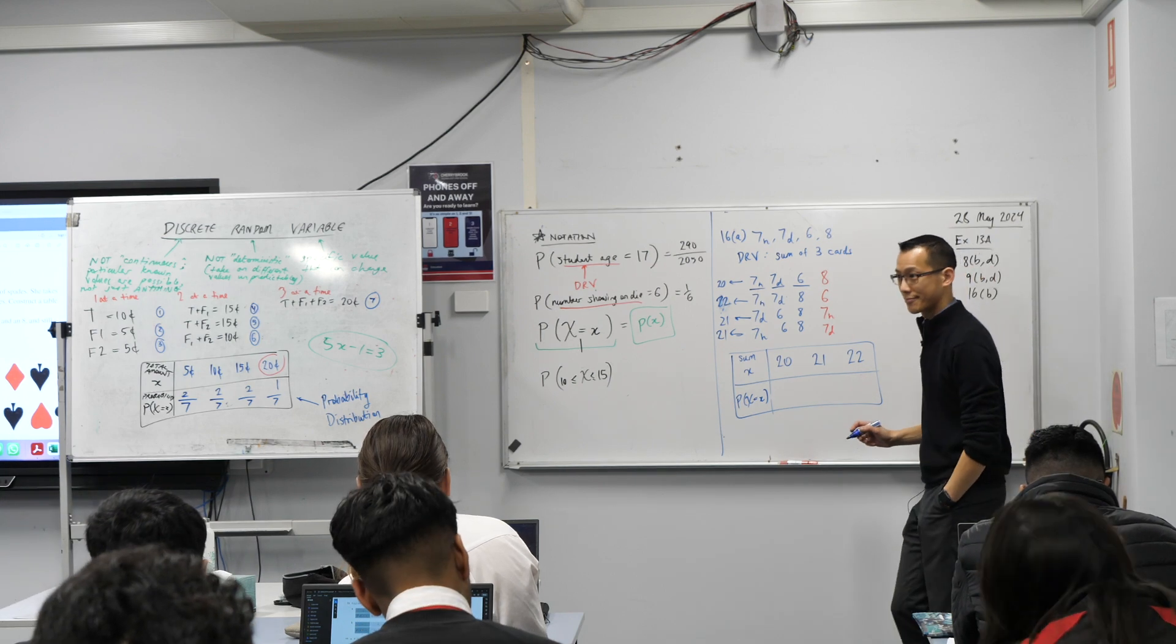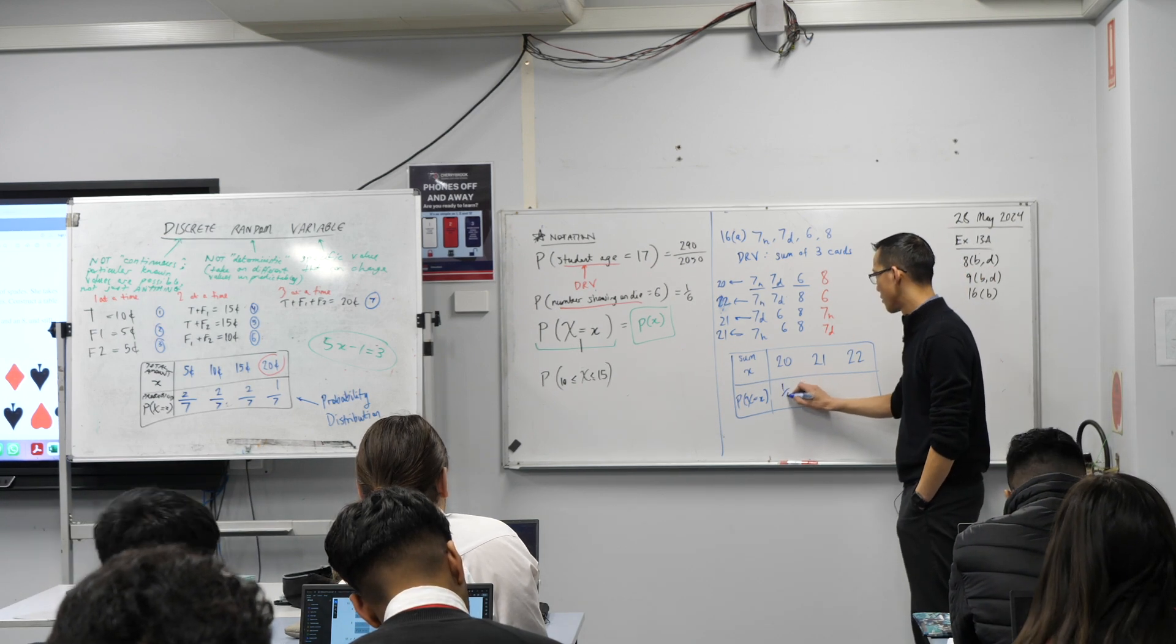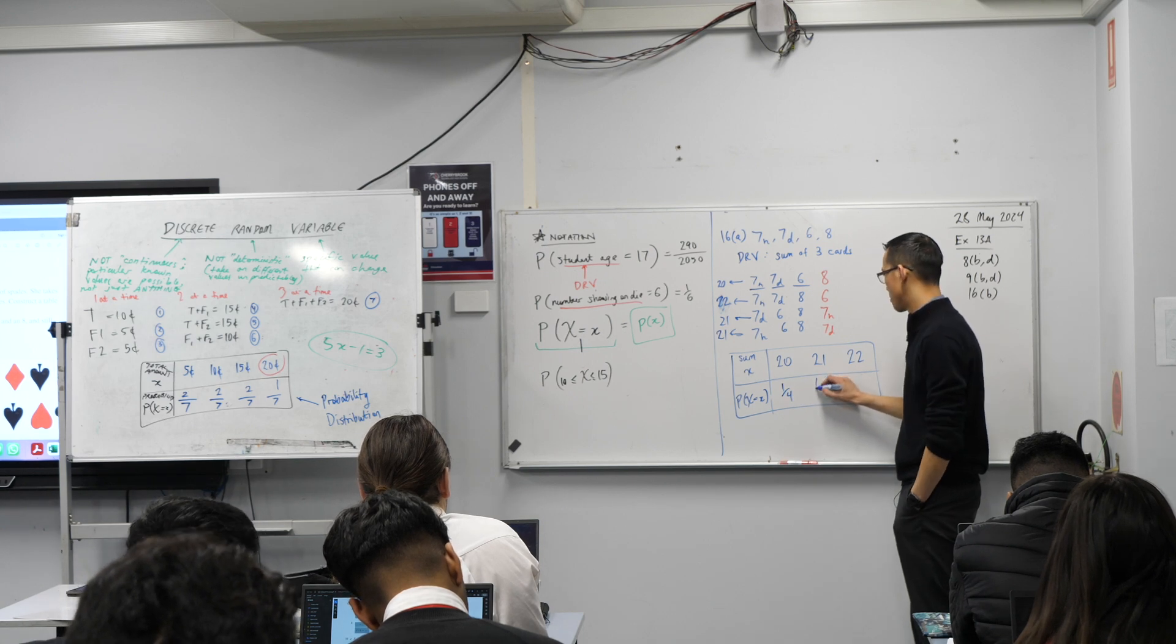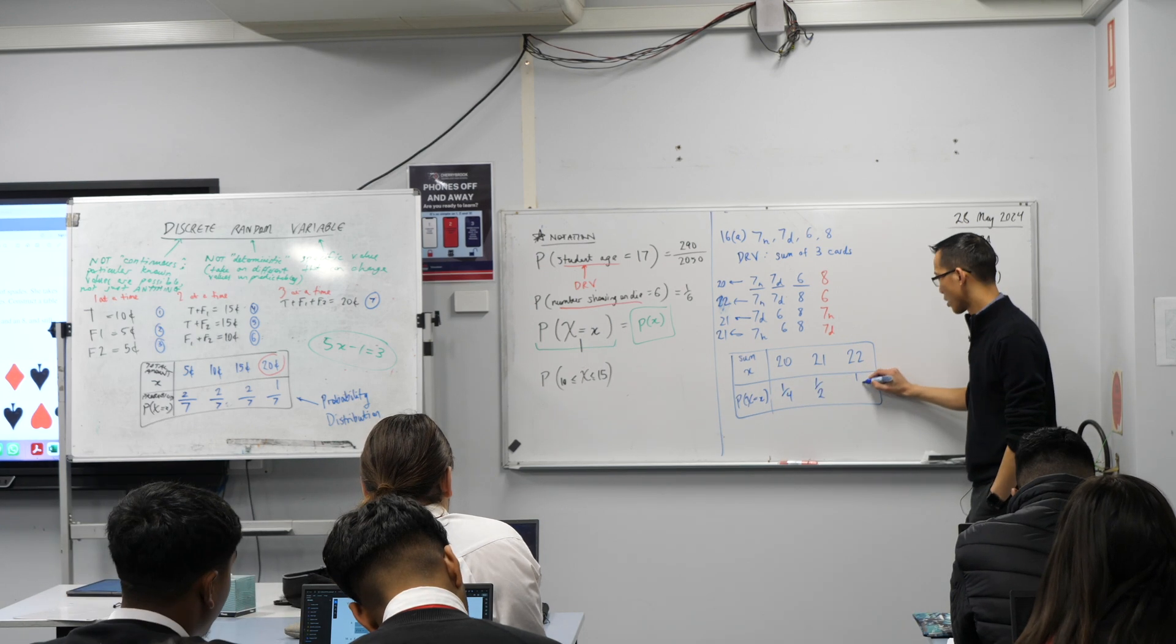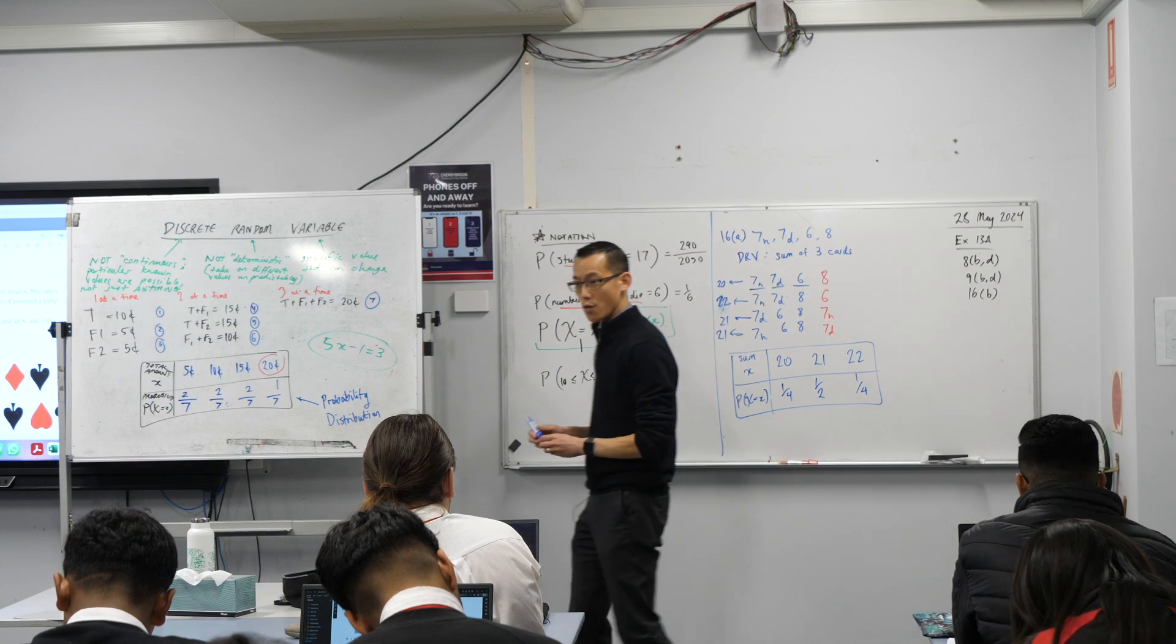What are my probabilities? A quarter, a half or two quarters, both the same thing, and a quarter. Great. That's the end of the question for now.